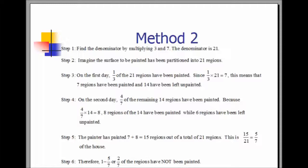The painter has painted seven plus eight equals 15 regions out of 21, which is 15 over 21. We can reduce that fraction by dividing numerator and denominator by three to give us five-sevenths. Therefore, one minus five-sevenths, or two-sevenths of the regions have not been painted.